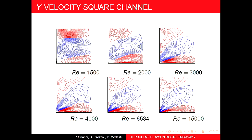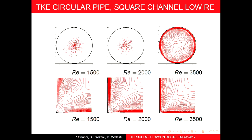When averaging only in time and in the streamwise direction X, the turbulent energy peaks remain localized near the corner. This means the secondary motion structures are permanent — they do not spread uniformly, which proves they are coherent structures. If they were moving randomly, the distribution would be uniform.